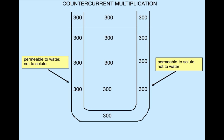We start with a simple loop of Henle in which the descending limb is only water permeable, and the ascending limb is only solute permeable. Initially, in our hypothetical example, the tubular fluid and interstitial osmolalities are 300 milliosmolar everywhere.